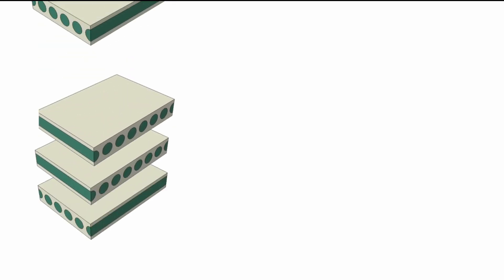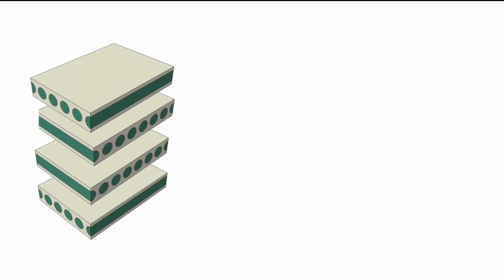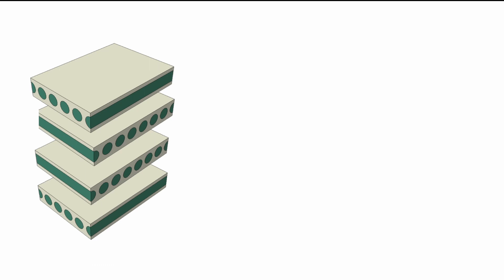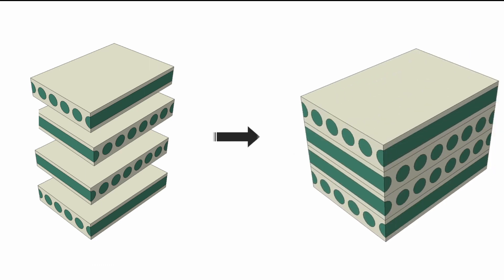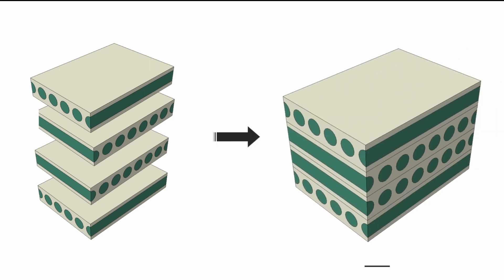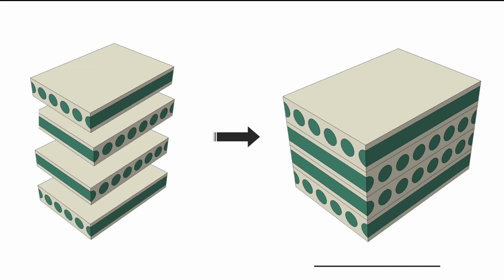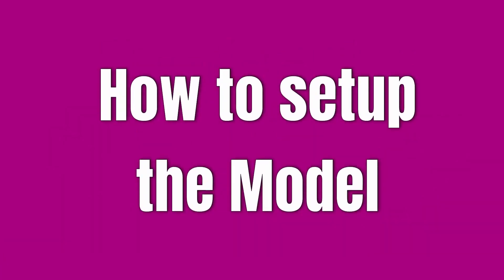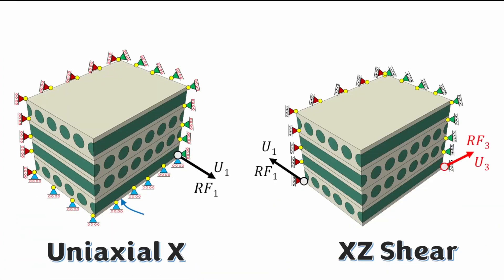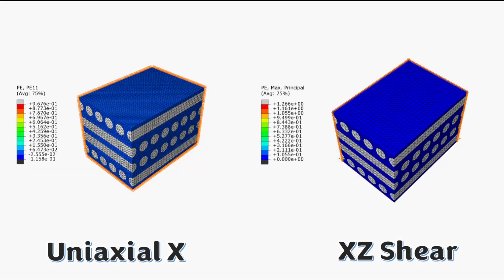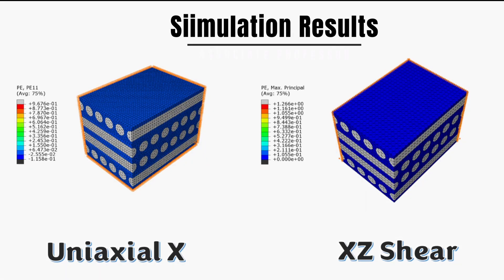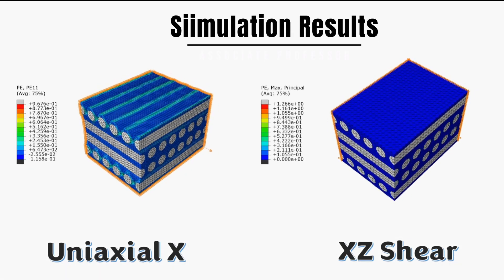This is a bi-directional composite showing four laminae that are stacked on top of each other, and when combined you end up with a representative volume element. What we want to do is show how to actually set up this model so that you can run simulations on them, with a major focus on how to apply boundary conditions so that we can end up with simulations that look like this.